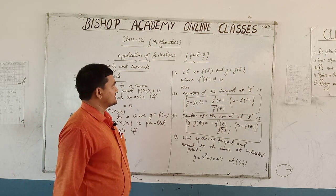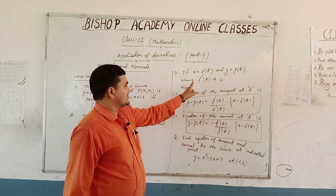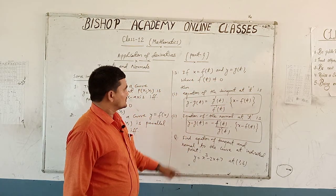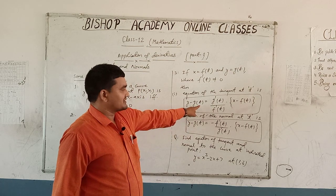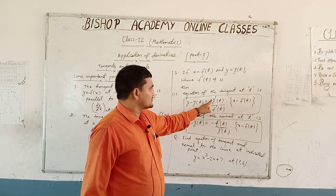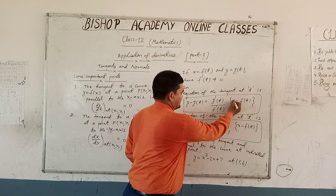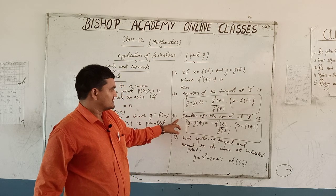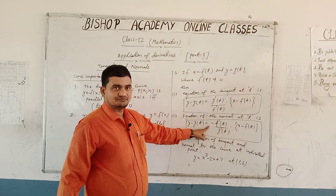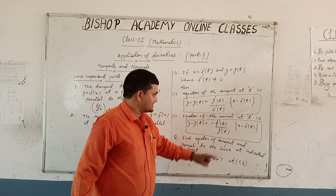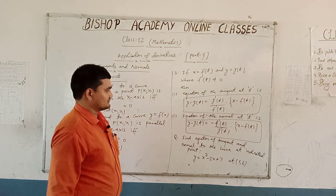The third point: if x = f(t) and y = g(t) at a point where f'(t) is not equal to 0, then the equation of the tangent at t is y − g(t) = [g'(t) / f'(t)] × (x − f(t)), and the equation of the normal at t is y − g(t) = −[f'(t) / g'(t)] × (x − f(t)).